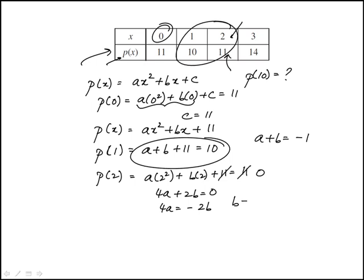Divide both sides by 2, this becomes b equals minus 2a. If I replace that here, b in terms of a, a plus minus 2a equals minus 1. This is minus a equals minus 1, or a is 1.